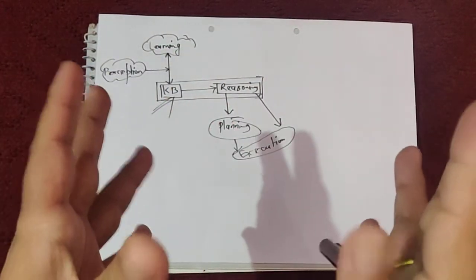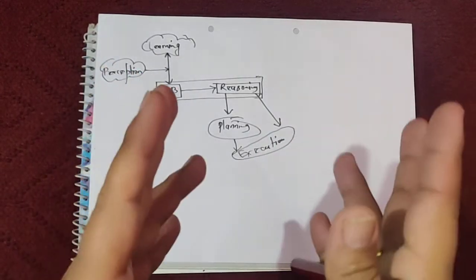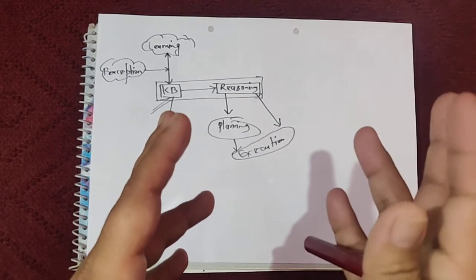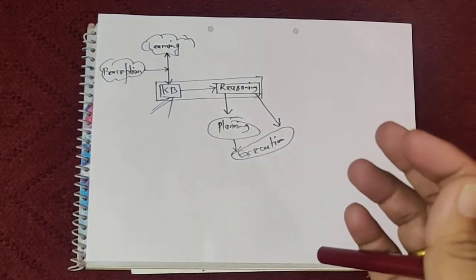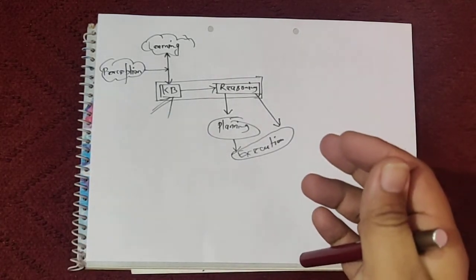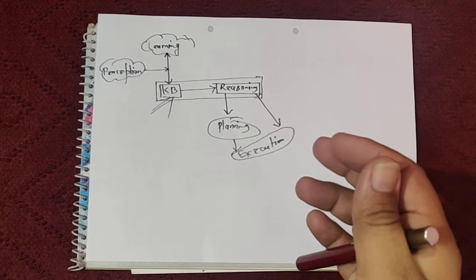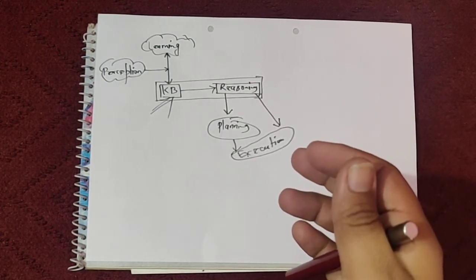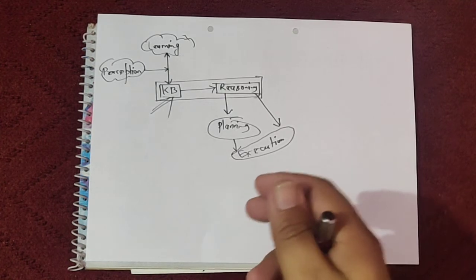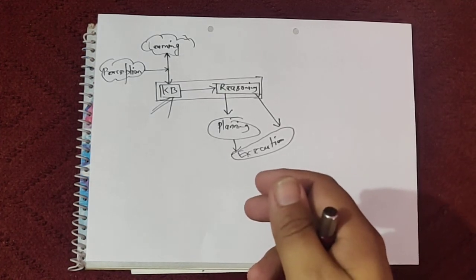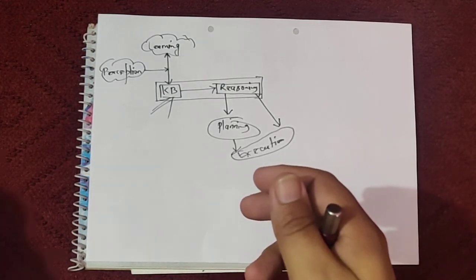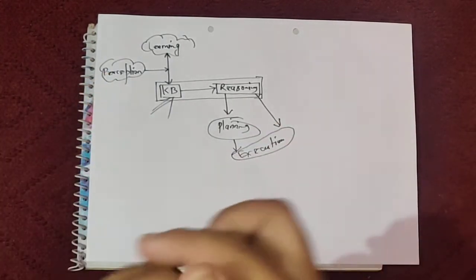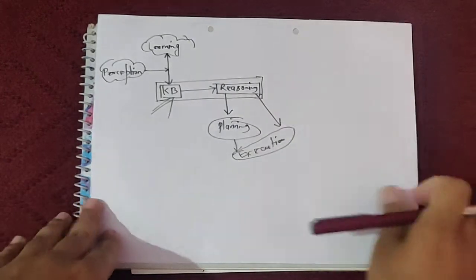Knowledge is defined as the concept of understanding of a subject area or a given domain. Knowledge can be classified into five types: declarative knowledge, structural knowledge, heuristic knowledge, procedural knowledge, and meta knowledge.